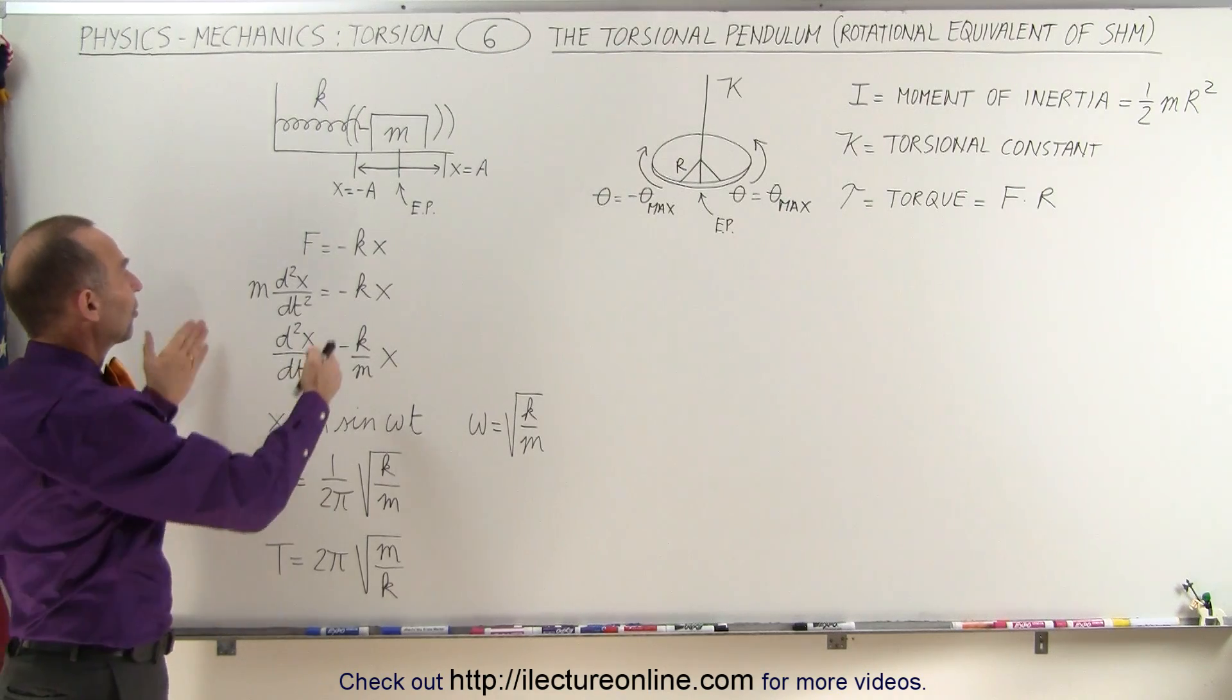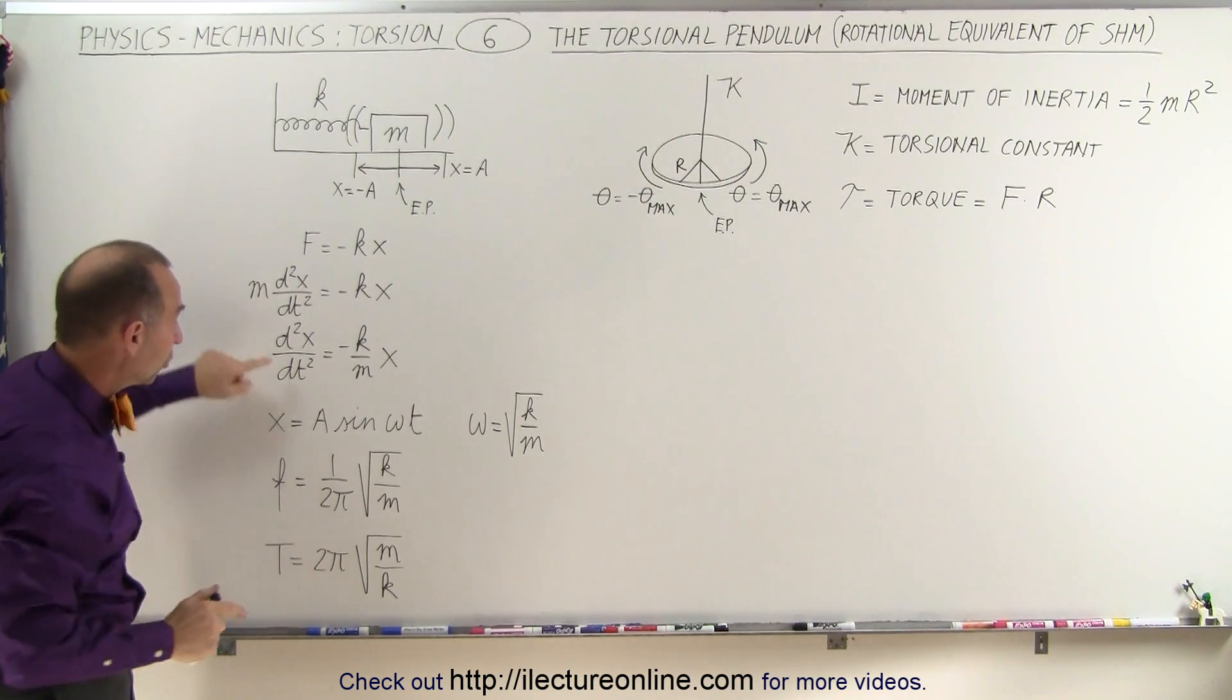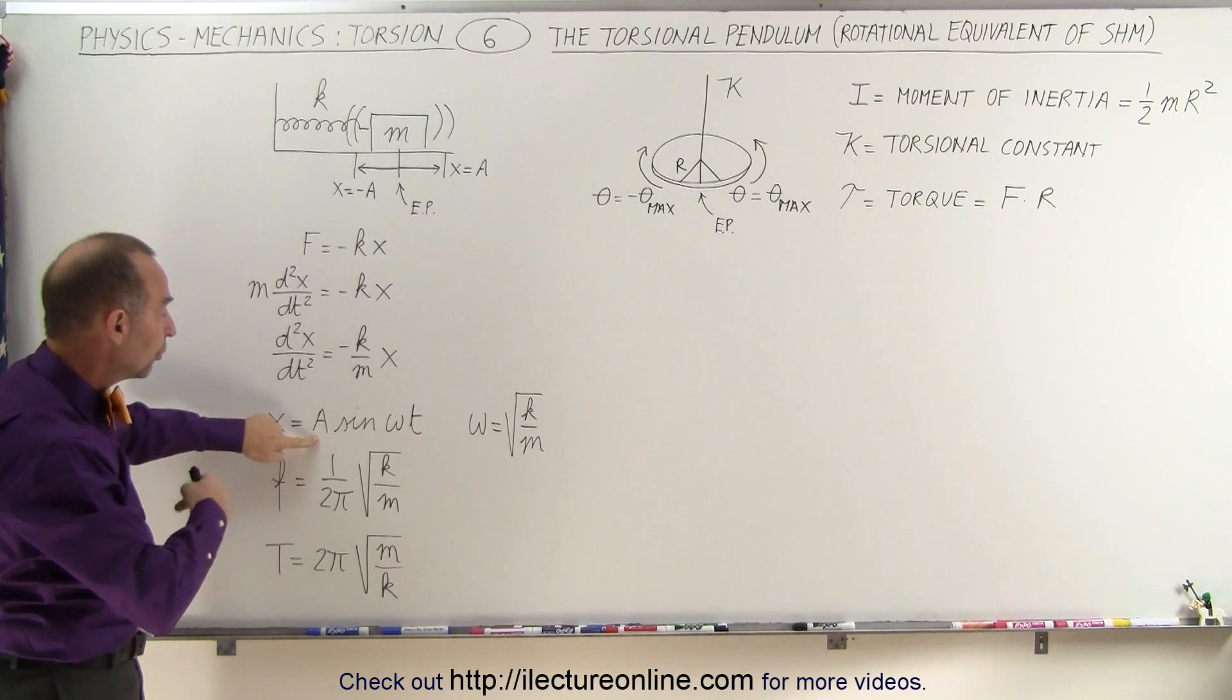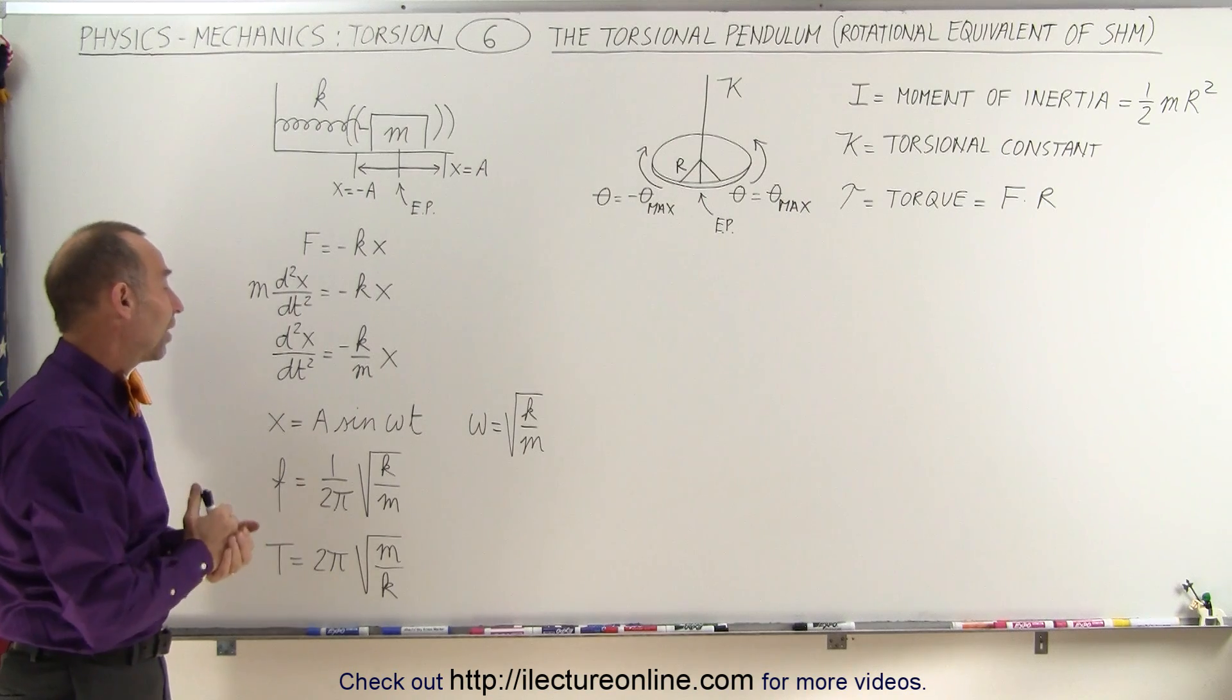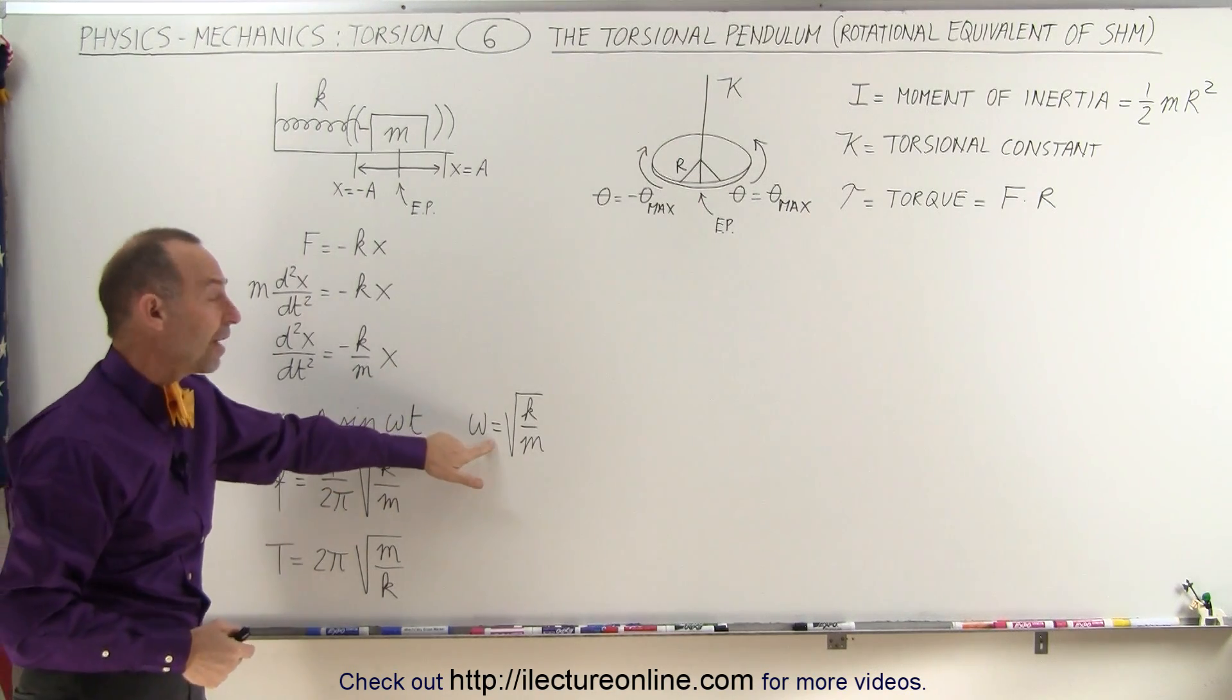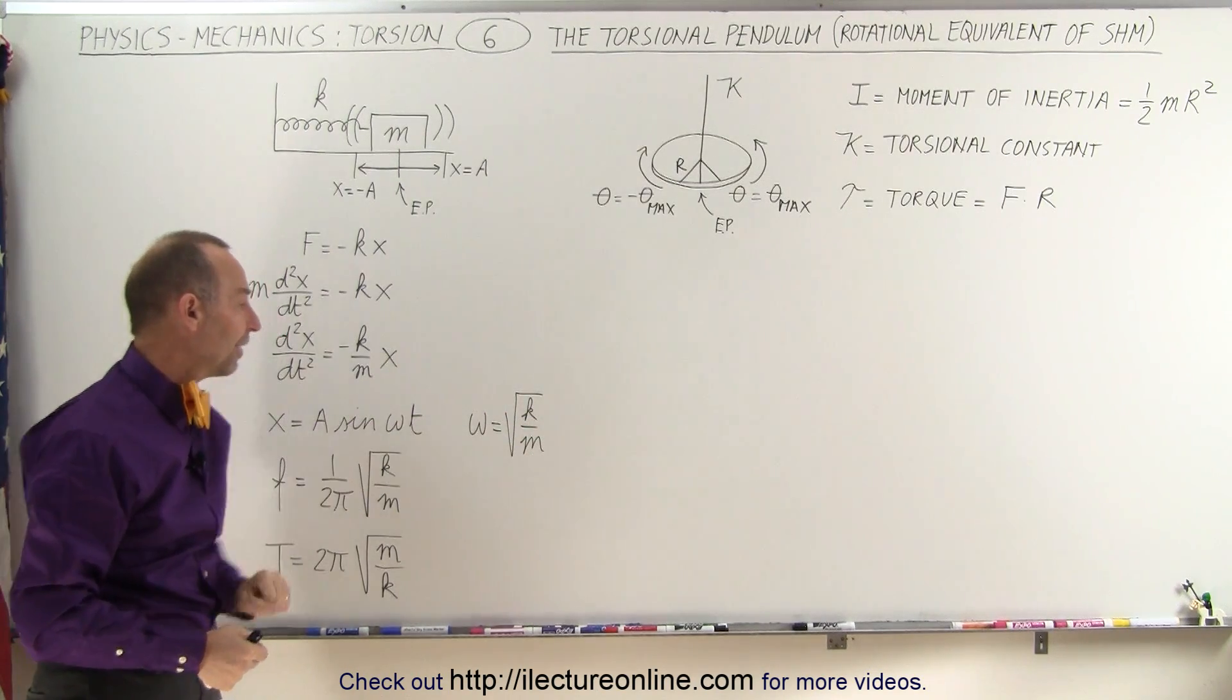If you write this as a differential equation, and then we write it in this format, we then know that the solution to this differential equation is x equals the magnitude, or the amplitude of the oscillation, times the sine of omega t, or it could also be written as the a times the cosine of omega t, where omega, the angular frequency, can be found by taking the square root of the spring constant divided by the mass.